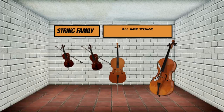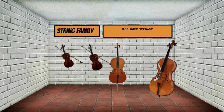Then the string family. The string family's characteristic is that they all have strings. Here from left to right we have a violin, a viola, a cello, and a double bass, or sometimes also called a string bass. They all look really similar, but they get bigger, and the bigger the instrument, the lower the sound.